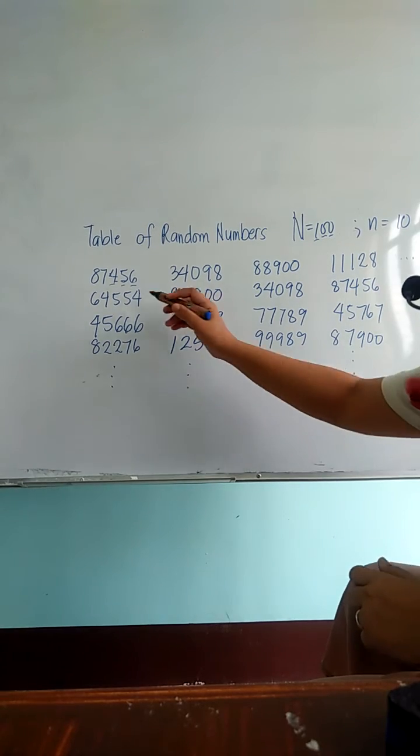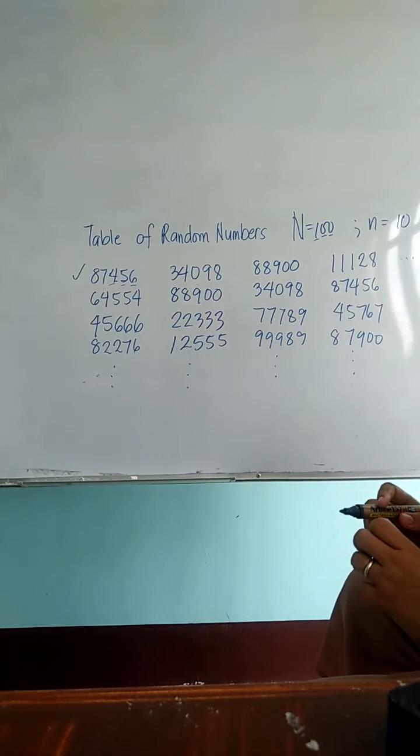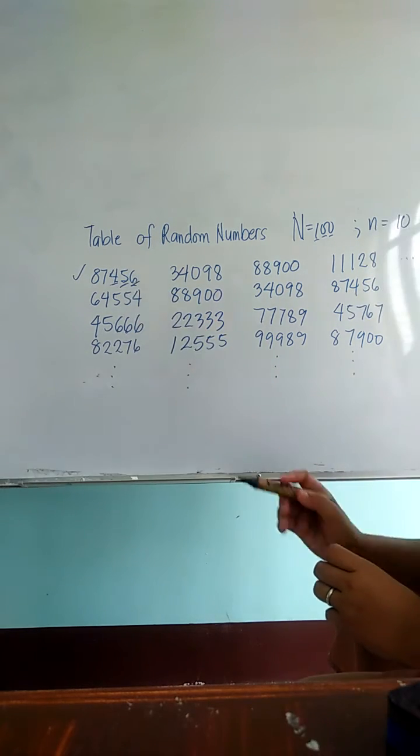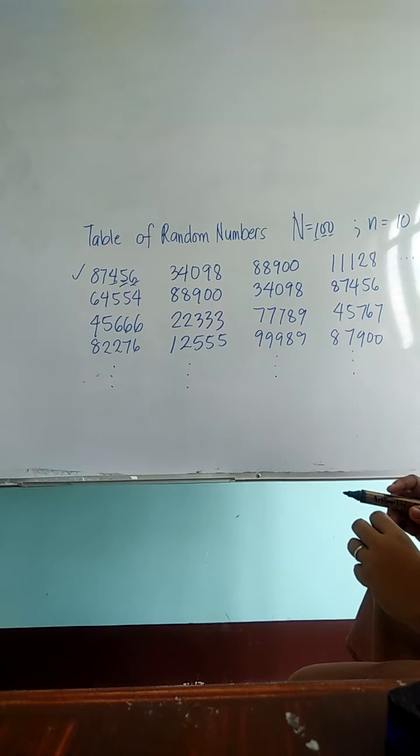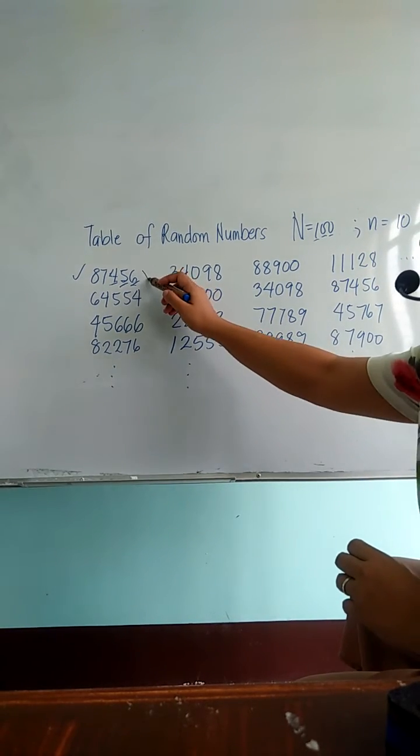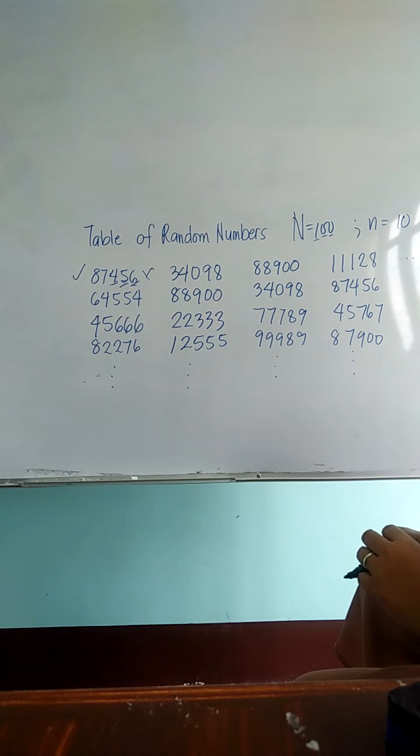So let's say we are going to start here in picking your samples. You are going to consider 456. Since 456 is beyond 100, that one will not be part of your sample.